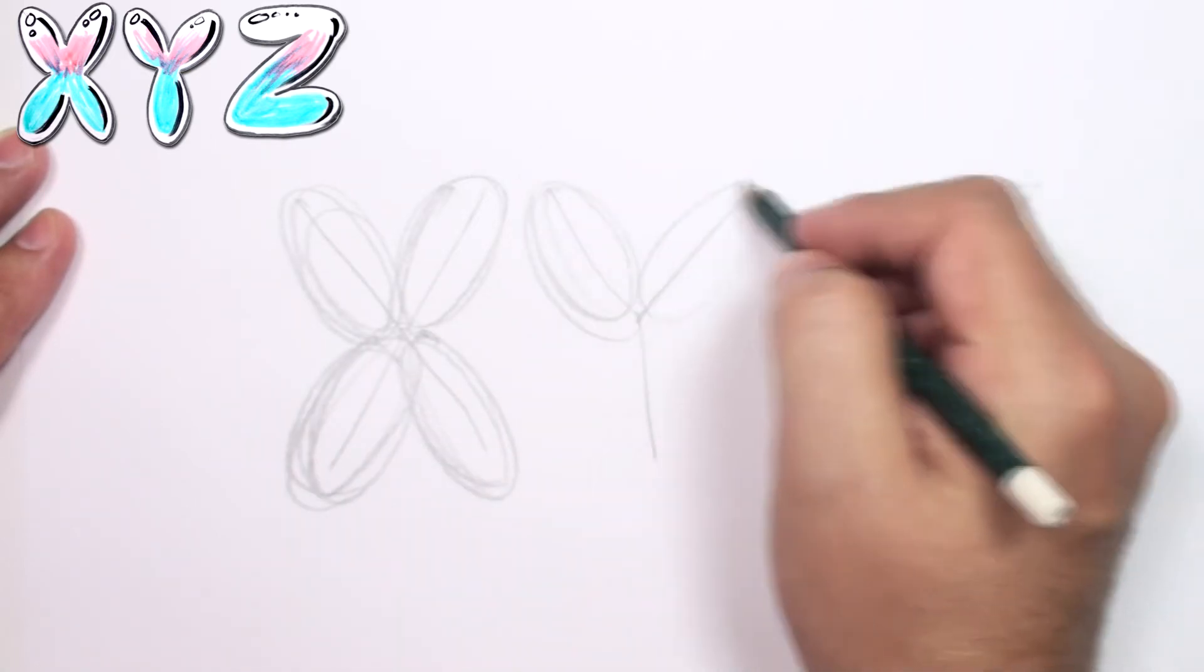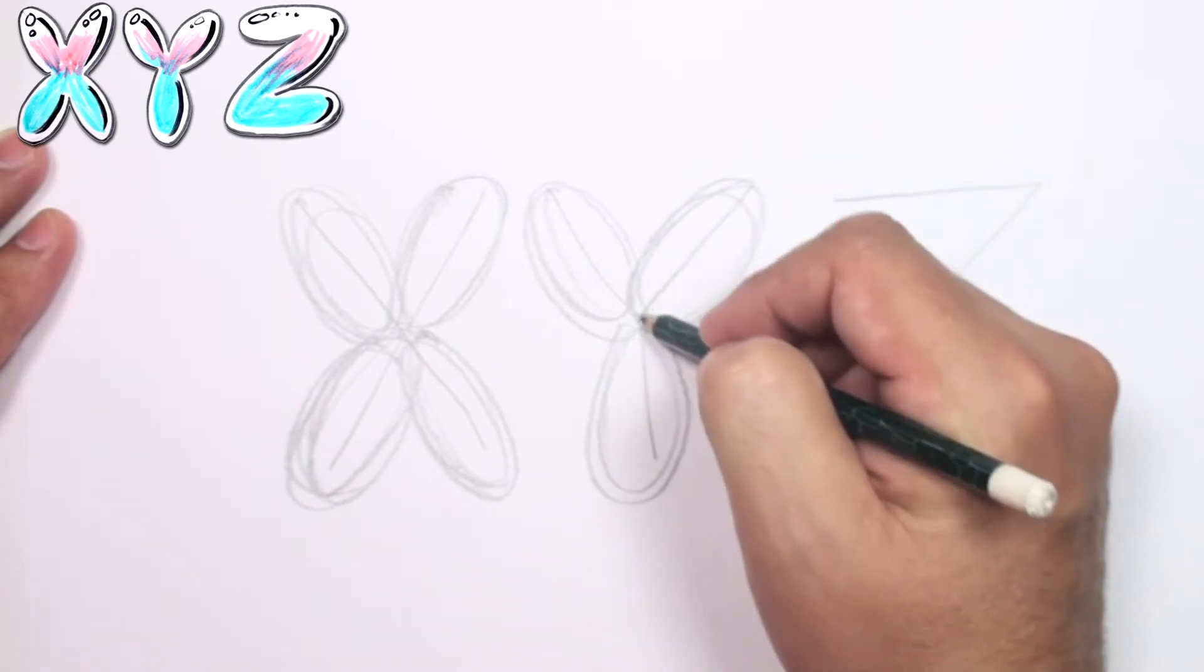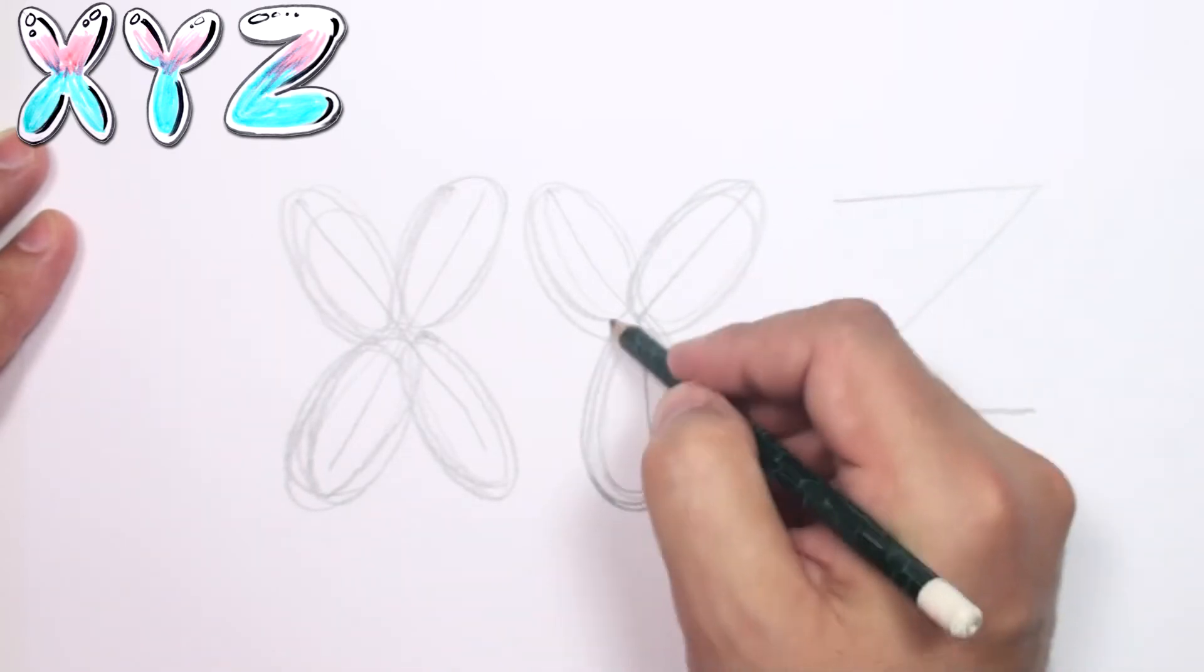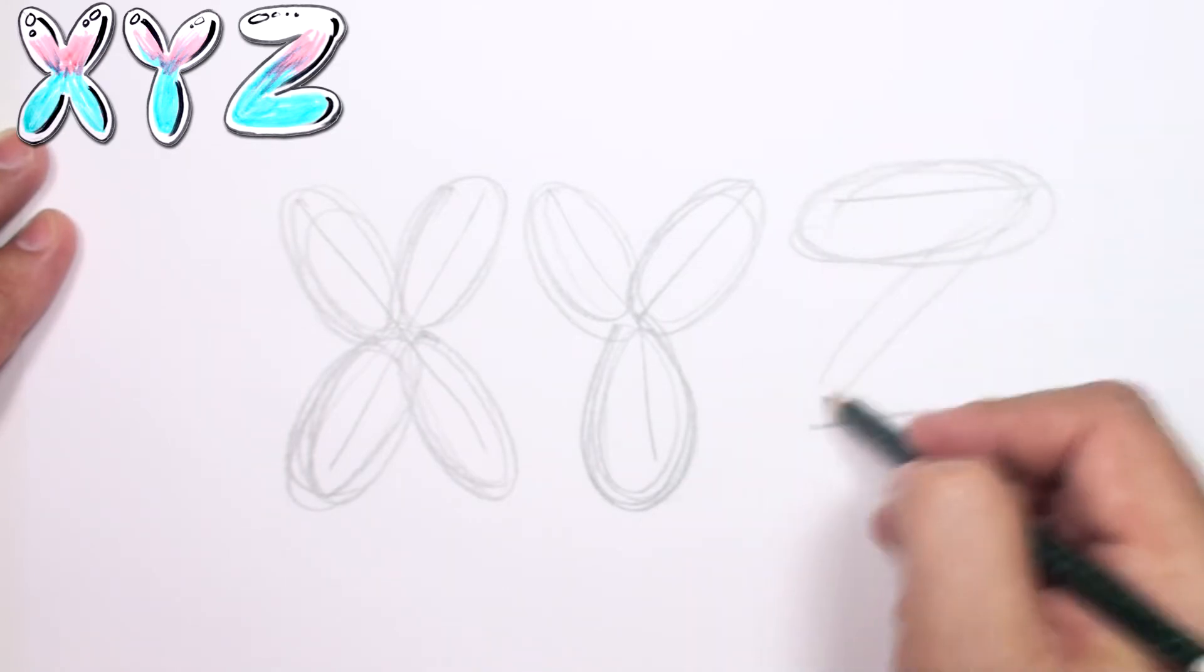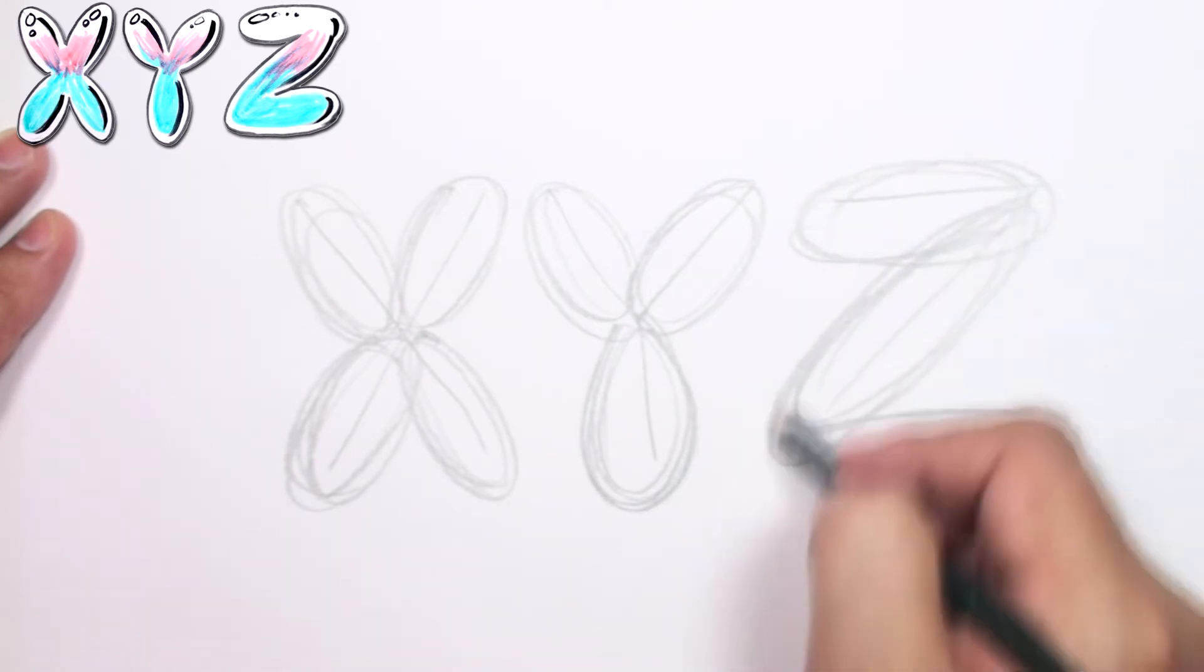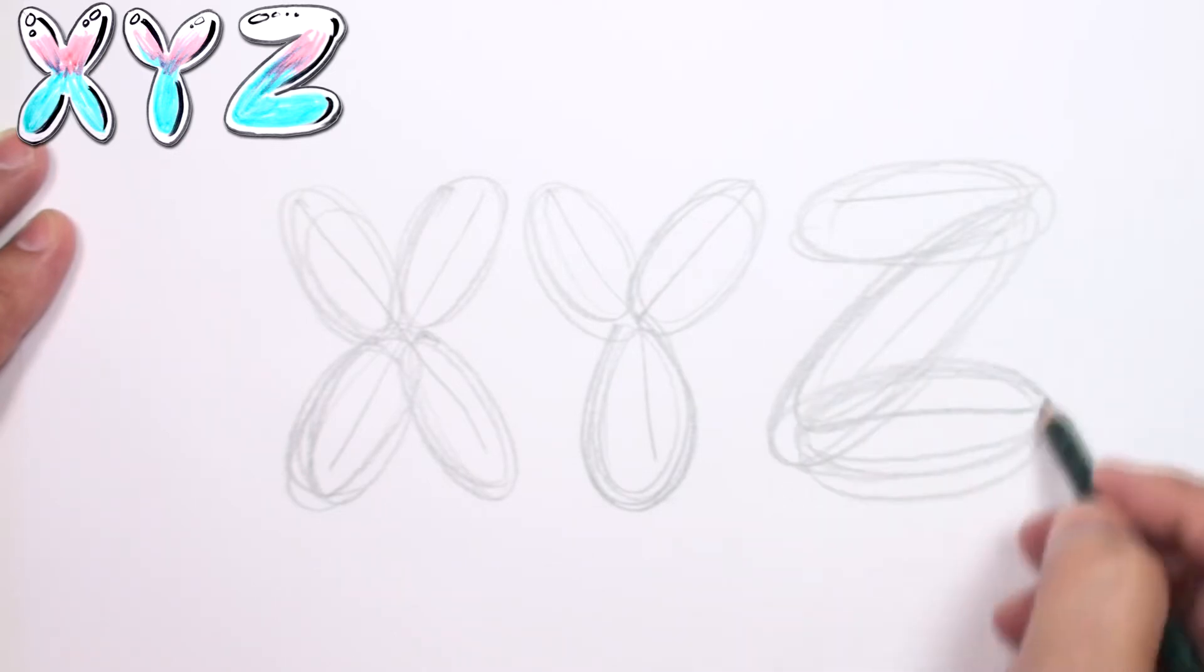For the Y, for each branch there. Make this one more of a teardrop down here. And the Z, pretty much a standard big bubble for each part of the Z.